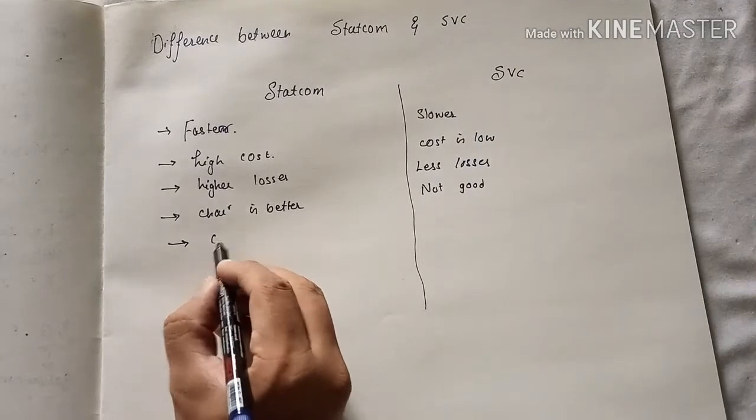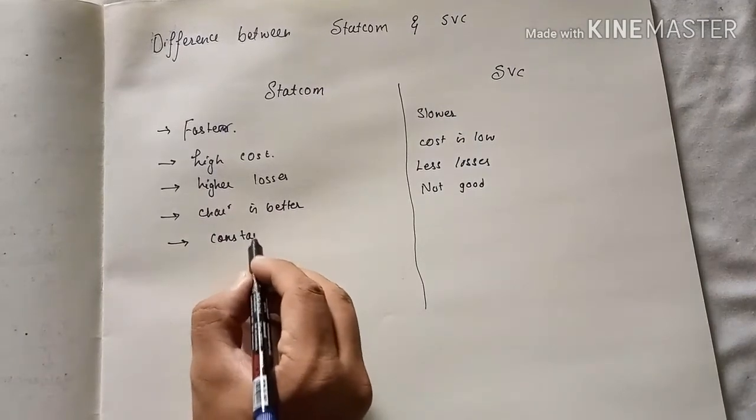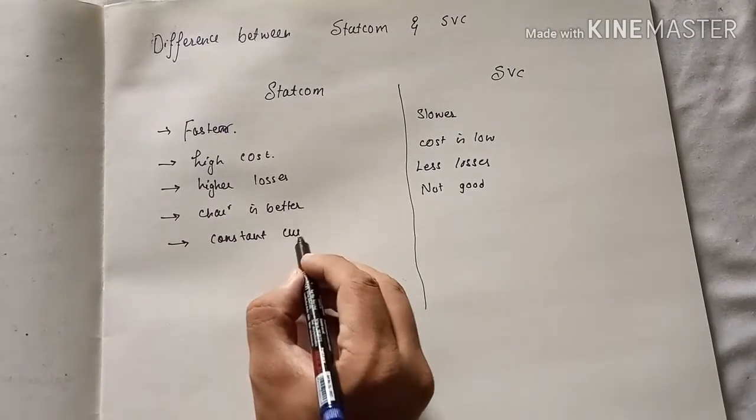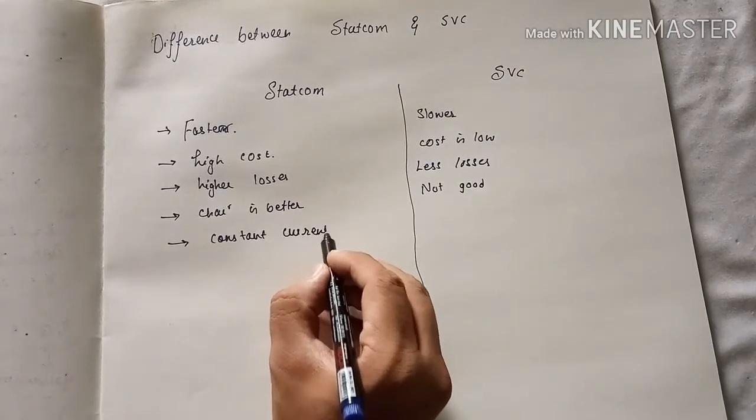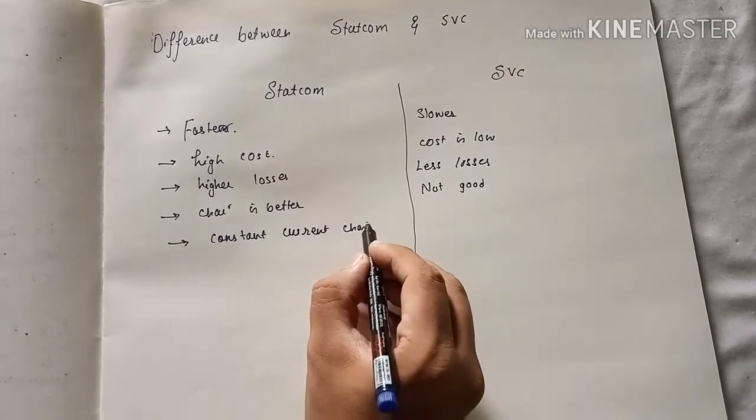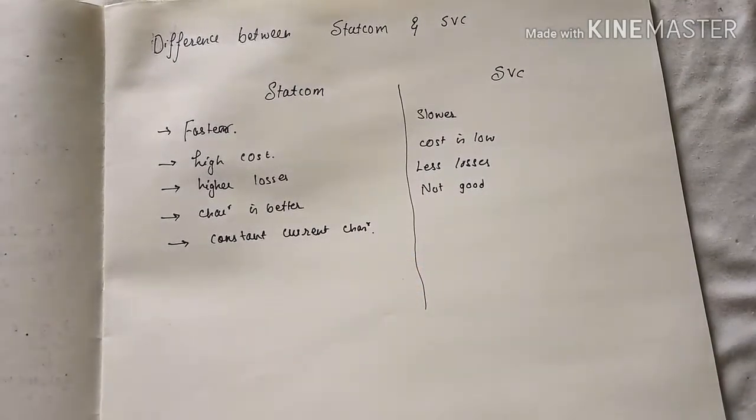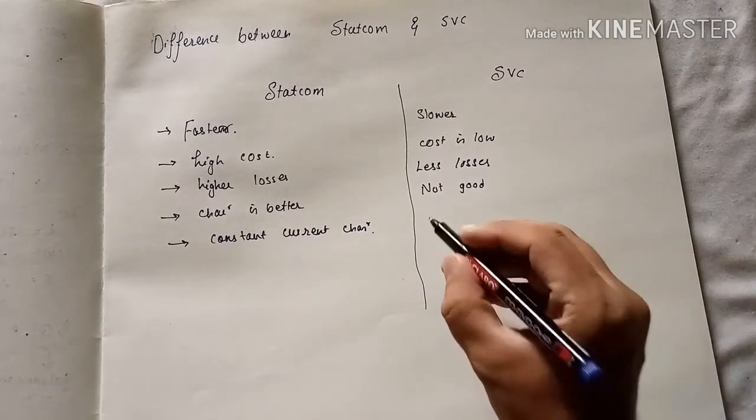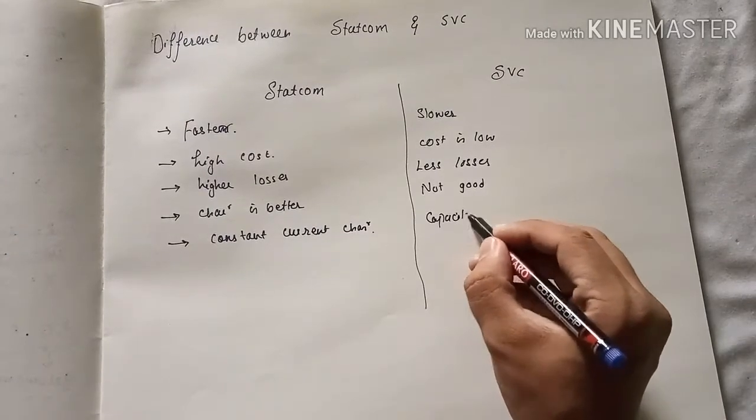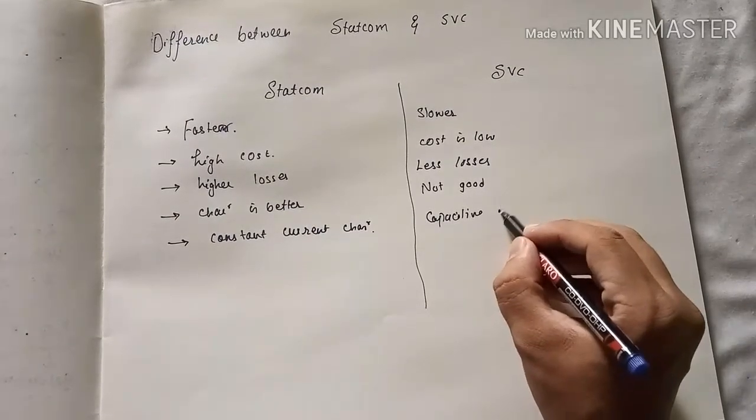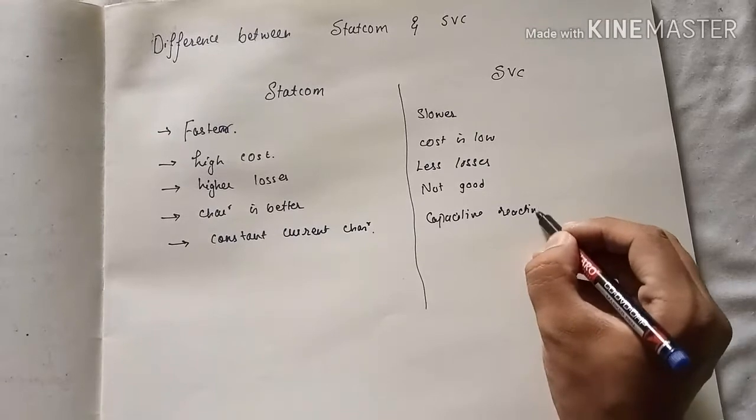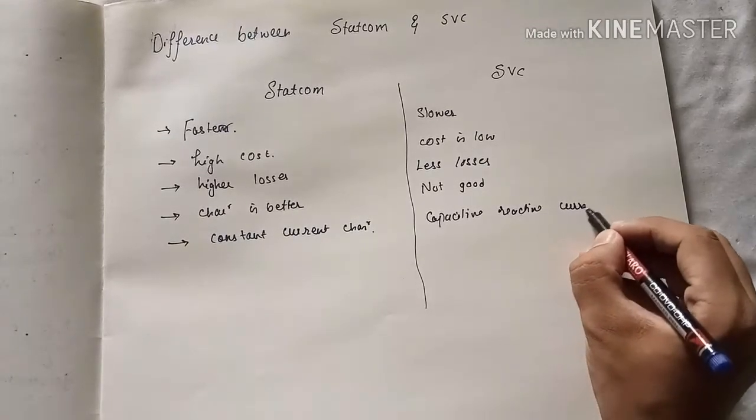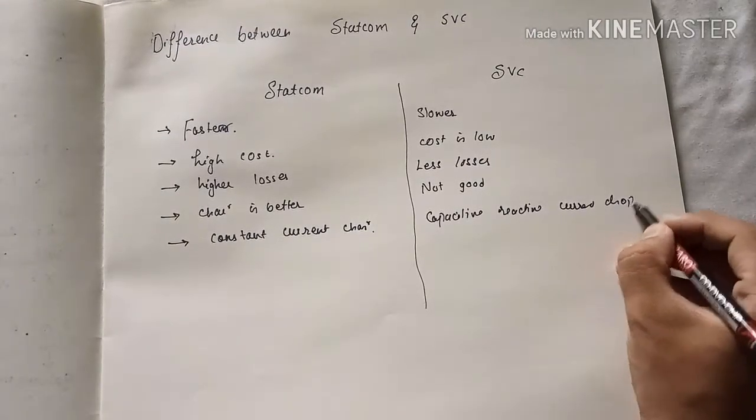STATCOM has constant current characteristics, and in SVC the capacitive reactive current drops linearly.